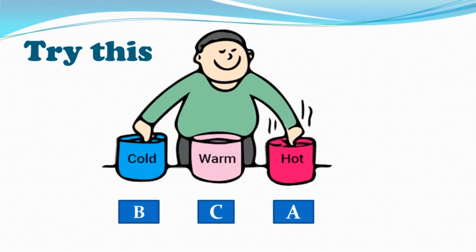Now dip both hands in vessel C. What do you feel? Even though both hands are dipped in water at the same temperature, your right hand will find the water to be cold, while your left hand will find it to be hot — because vessel A contained hot water and vessel B contained cold water.